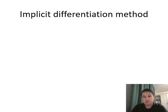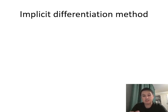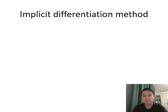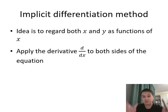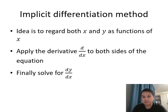In usual differentiation, we regard y as a function of x and take the derivative with respect to x. In implicit differentiation, the trick is not only to regard y as a function of x, but also to regard x as a function of x — and the derivative of x with respect to x is just 1. So the steps are: think of both x and y as functions of x, take the derivative of both sides of the equation, then solve for dy/dx.